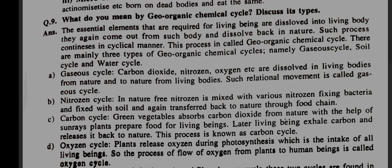The essential elements required for living beings are dissolved into living bodies. They again come out from such bodies and dissolve back in nature. Such a process continues in a cyclical manner — this process is called a geo-biogeochemical cycle. There are mainly three types: gaseous cycle, soil cycle, and water cycle.